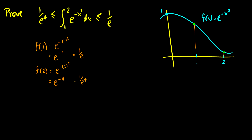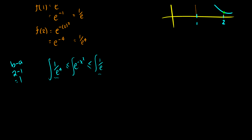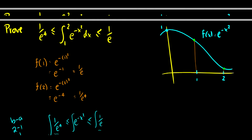With those upper and lower bounds, we write the inequality: 1/e⁴ ≤ e^(−x²) ≤ 1/e. Now we take the integral of all three. On the left and right we have constants, so we multiply by b − a, which is 2 − 1 = 1. Multiplying by one gives us: 1/e⁴ ≤ ∫e^(−x²)dx ≤ 1/e. So we have proven that this is true.